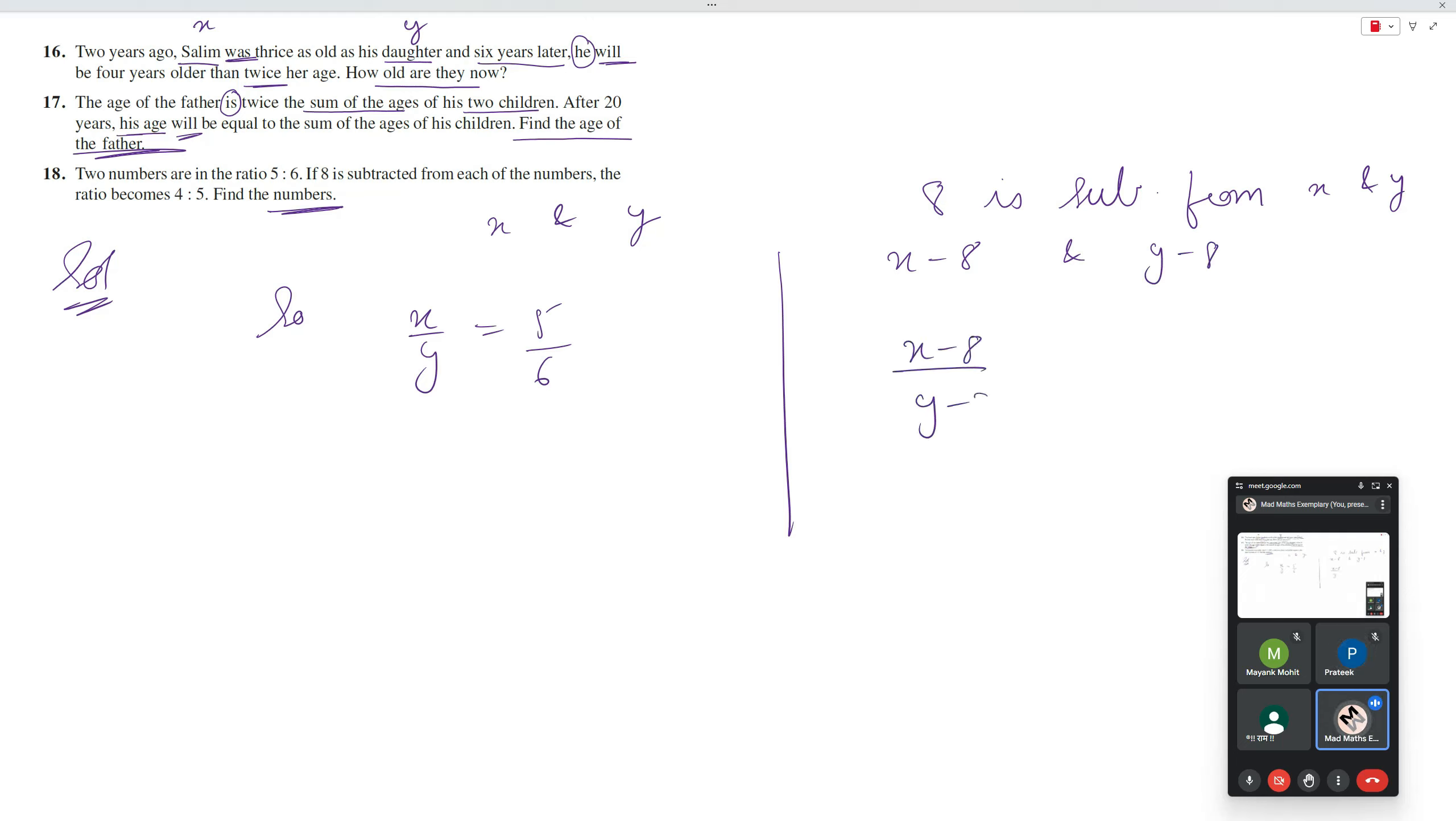So, x minus 8 upon y minus 8 is equals to 4 upon 5. Very easy, yes sir. Now 6x is equals to 5y, 5x minus 40 is equals to 4y minus 32.